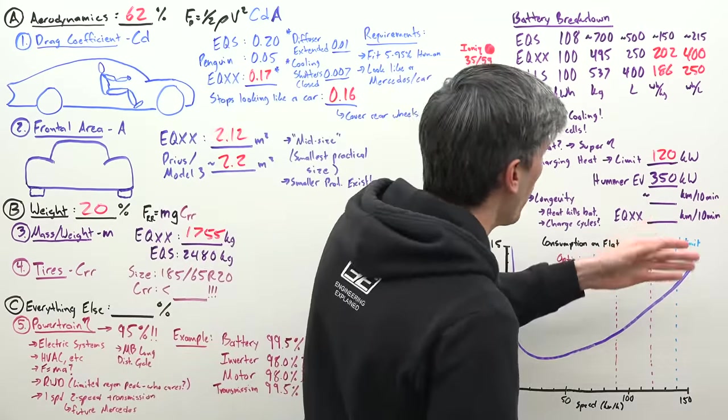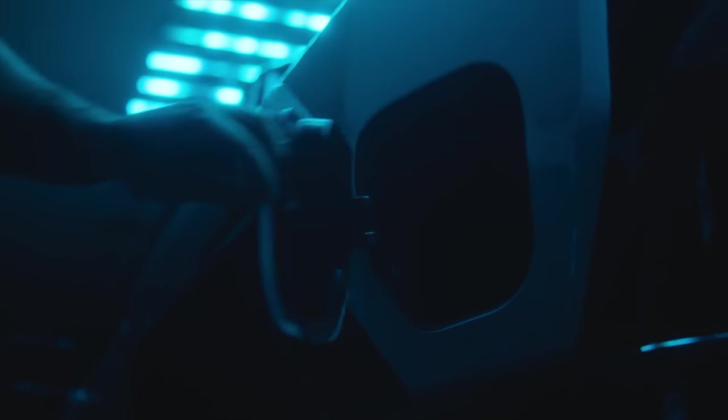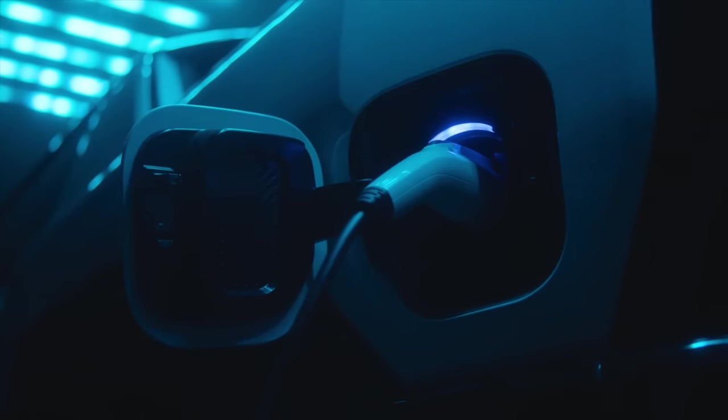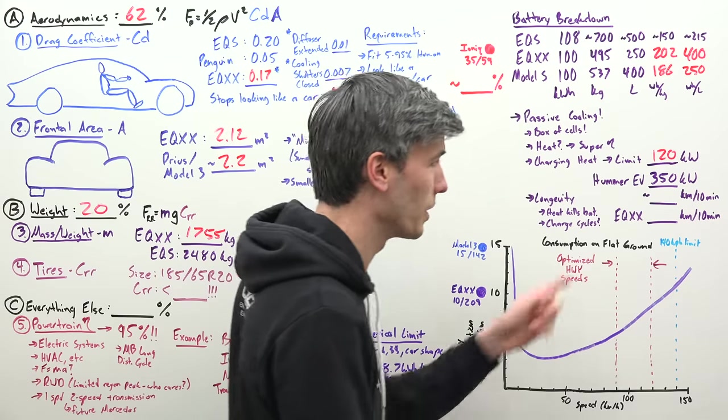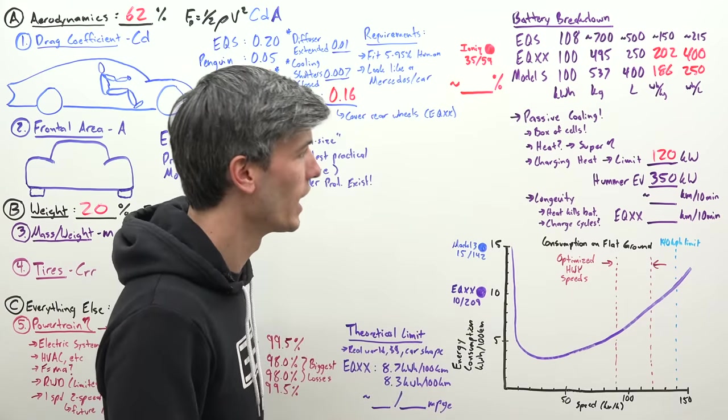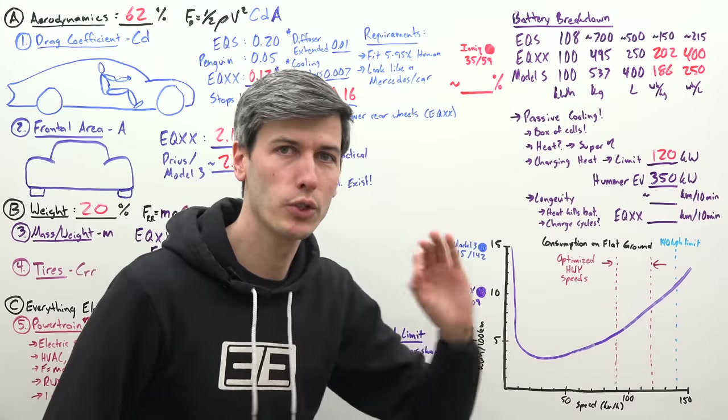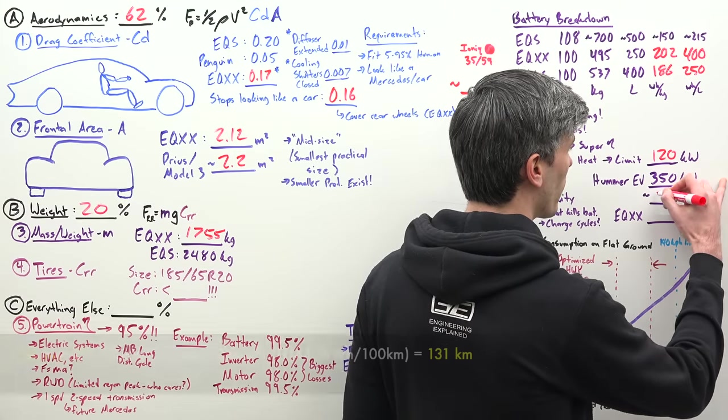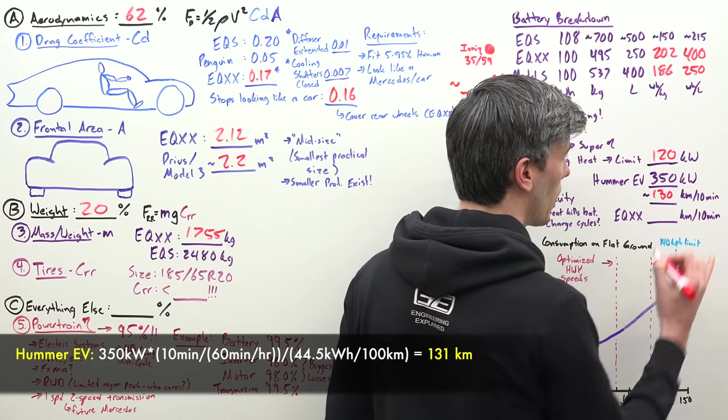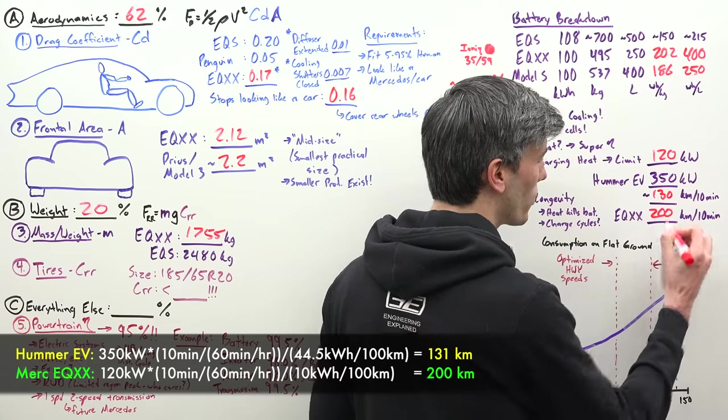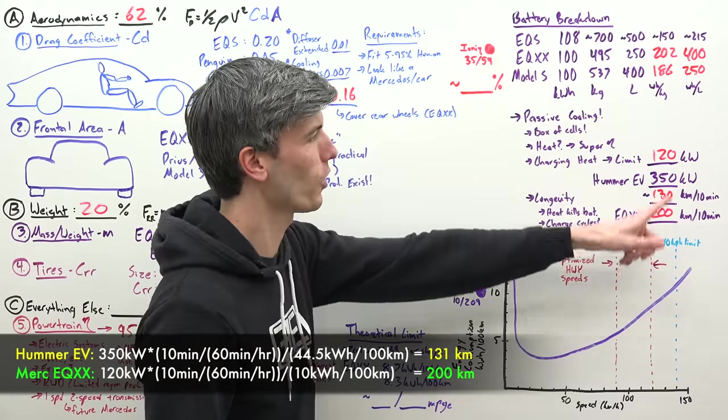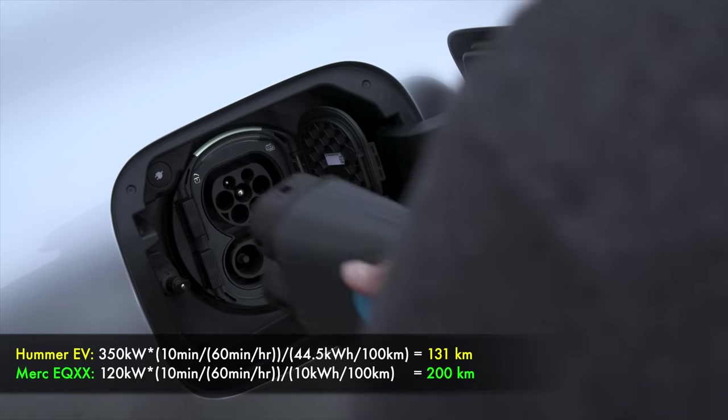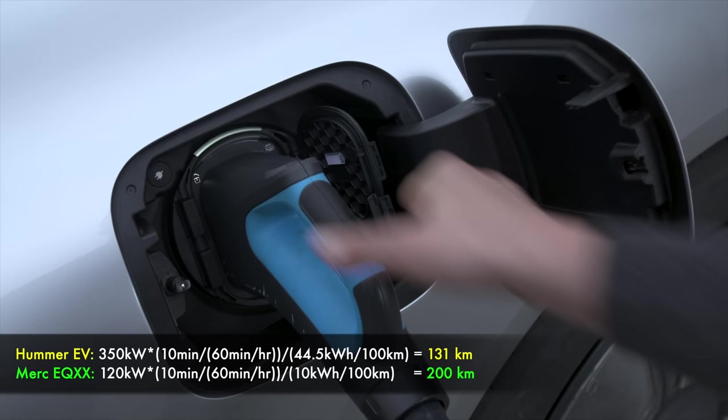You might say that's trash compared to the Hummer EV which can be charged at 350 kilowatts. Yes this is about three times the number. But because this vehicle is so efficient, if you charge for just 10 minutes, how far can you travel with either charge rate? For the Hummer that's about 130 kilometers. For the Mercedes that's 200 kilometers. Even though the charge rate is a third, because it's so much more efficient you can actually go further with however much time you spend at a charger.